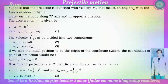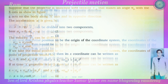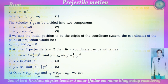If at time t the projectile is at point Q, then its x-coordinate is: x equals x-zero plus v-zero-x t plus one-half a_x t-squared. And the y-coordinate is: y equals y-zero plus v-zero-y t plus one-half a_y t-squared. This gives us x equals v-zero cos theta-zero times t (equation 4), and y equals v-zero sin theta-zero times t minus one-half g t-squared (equation 5).